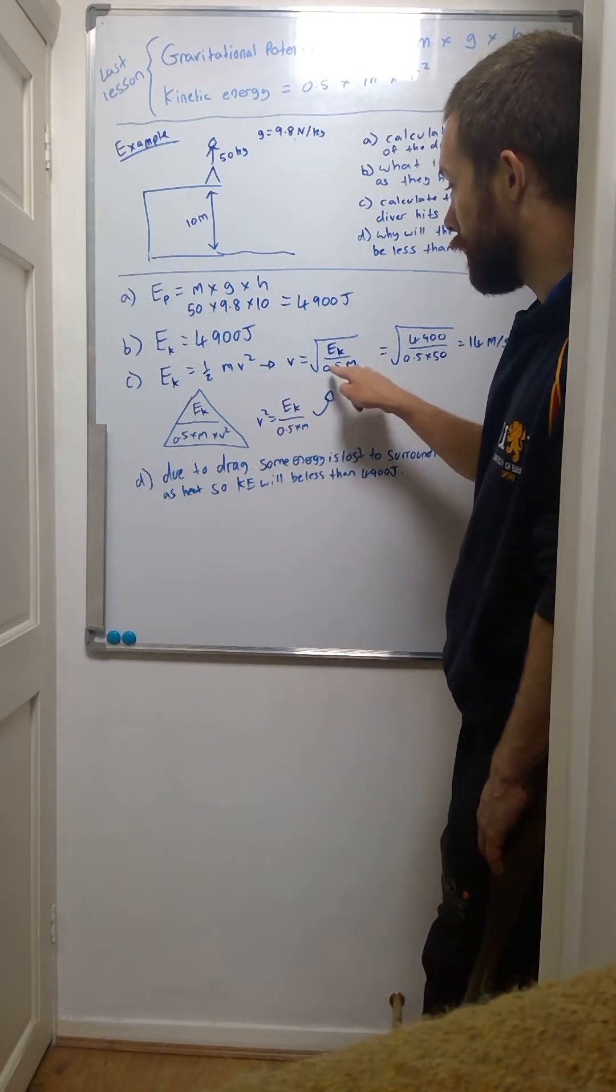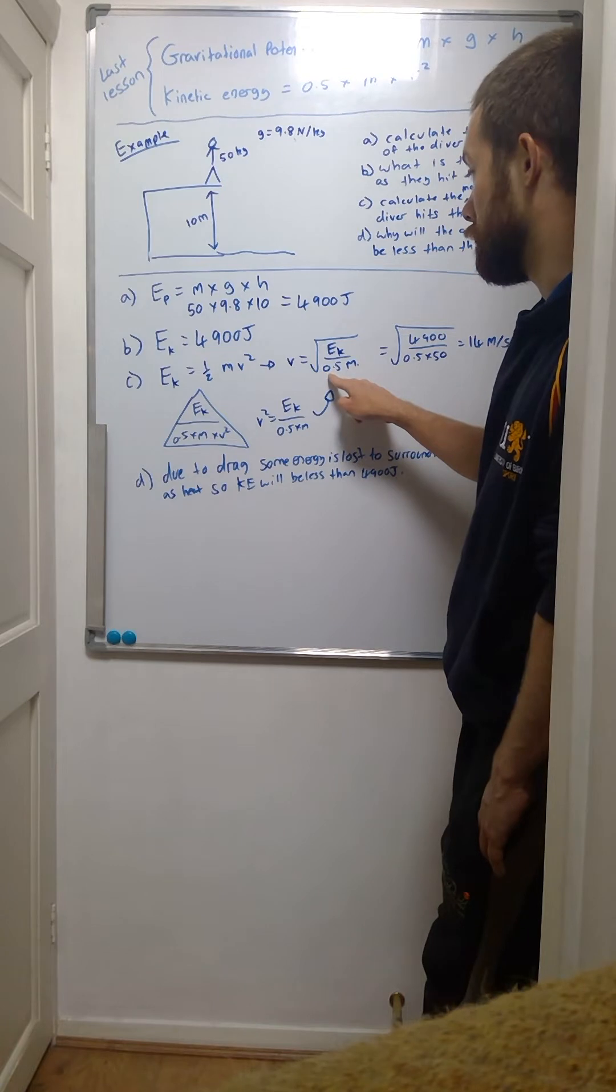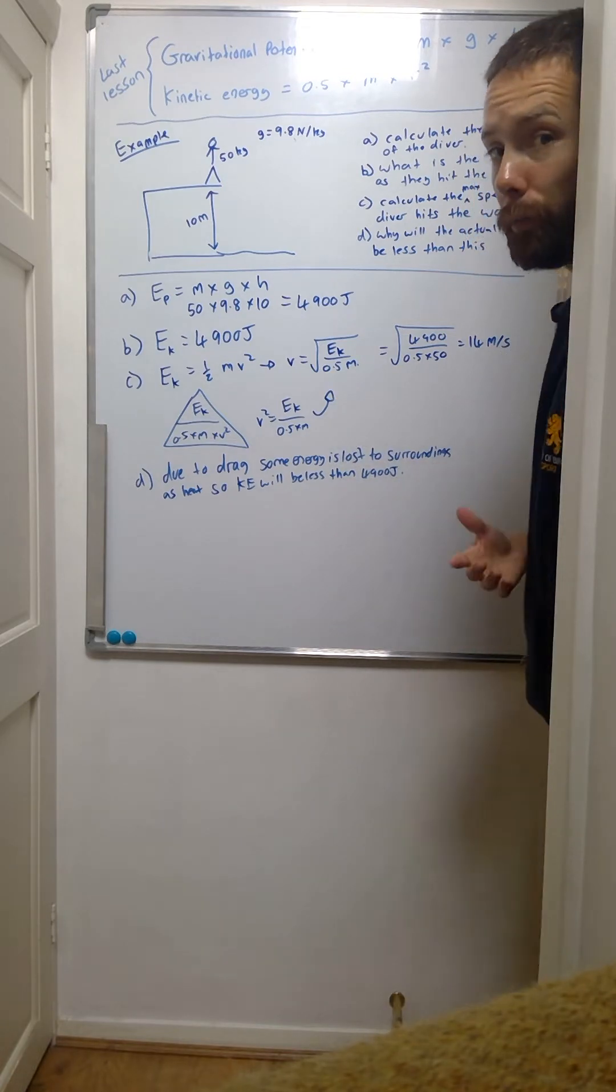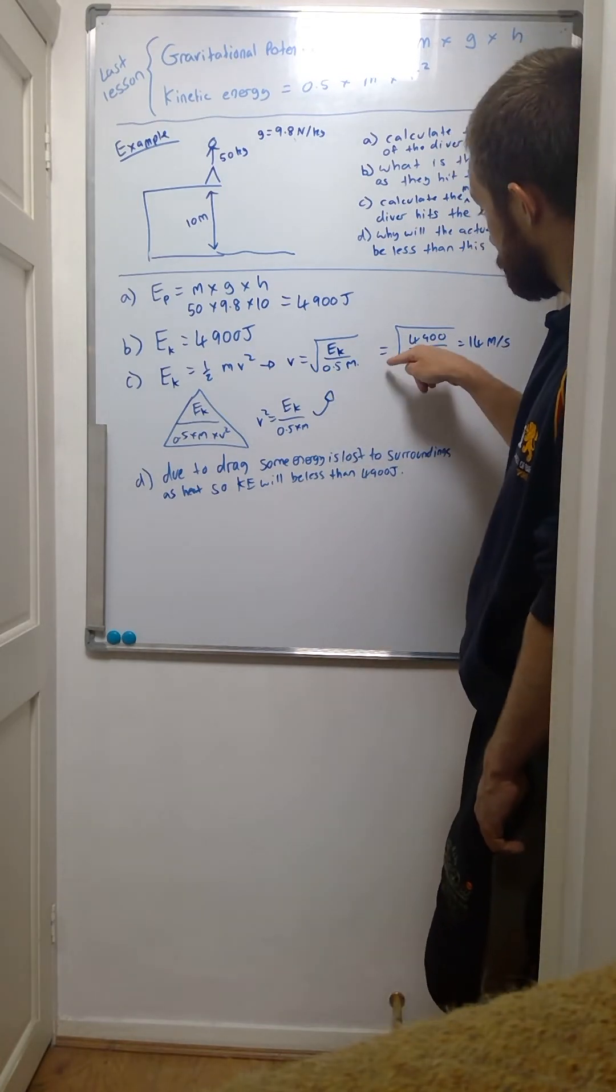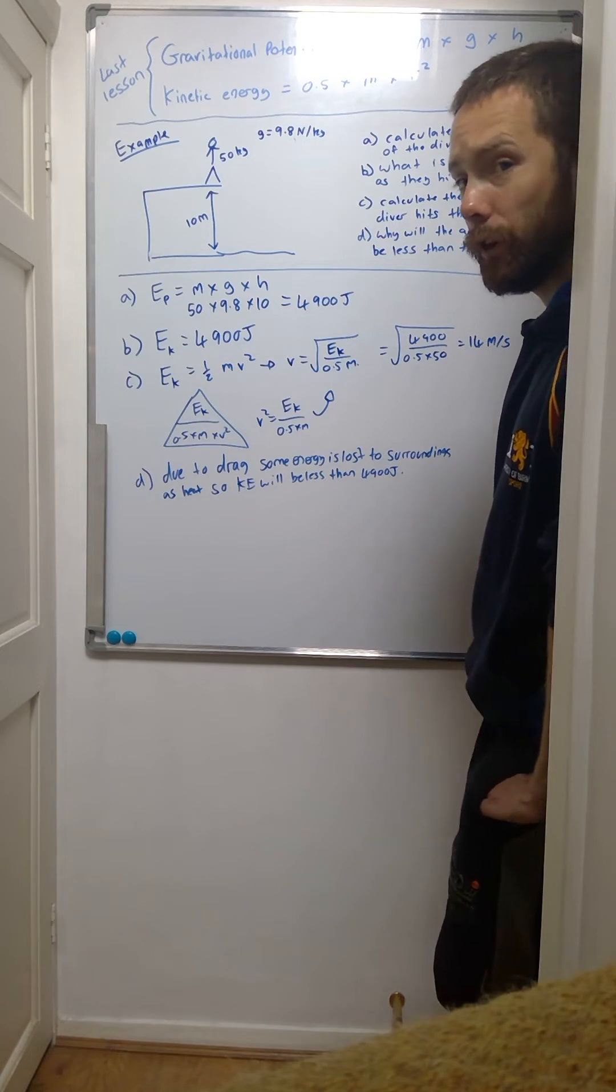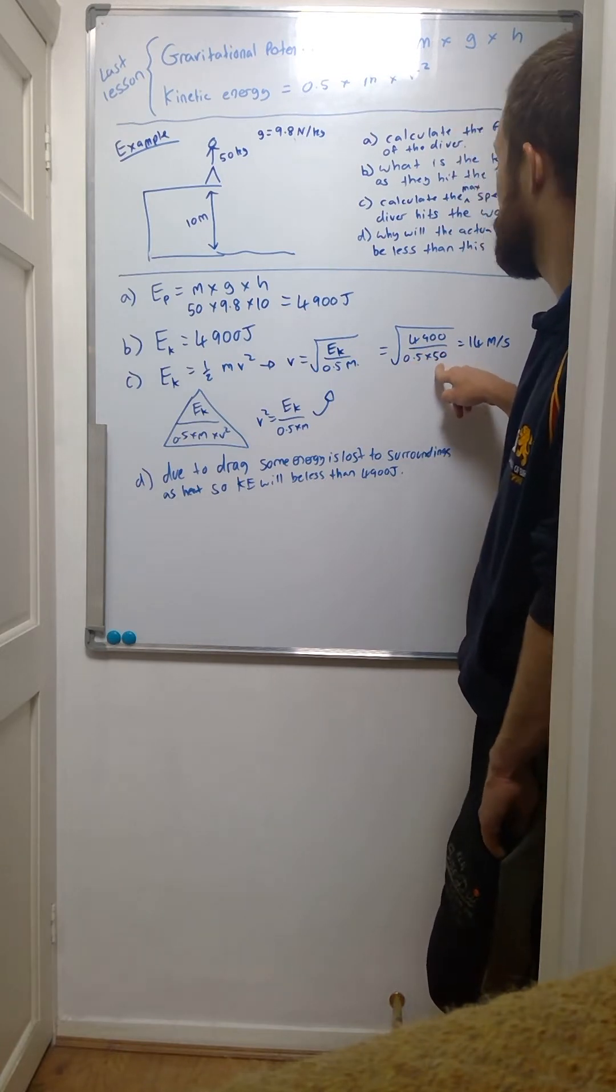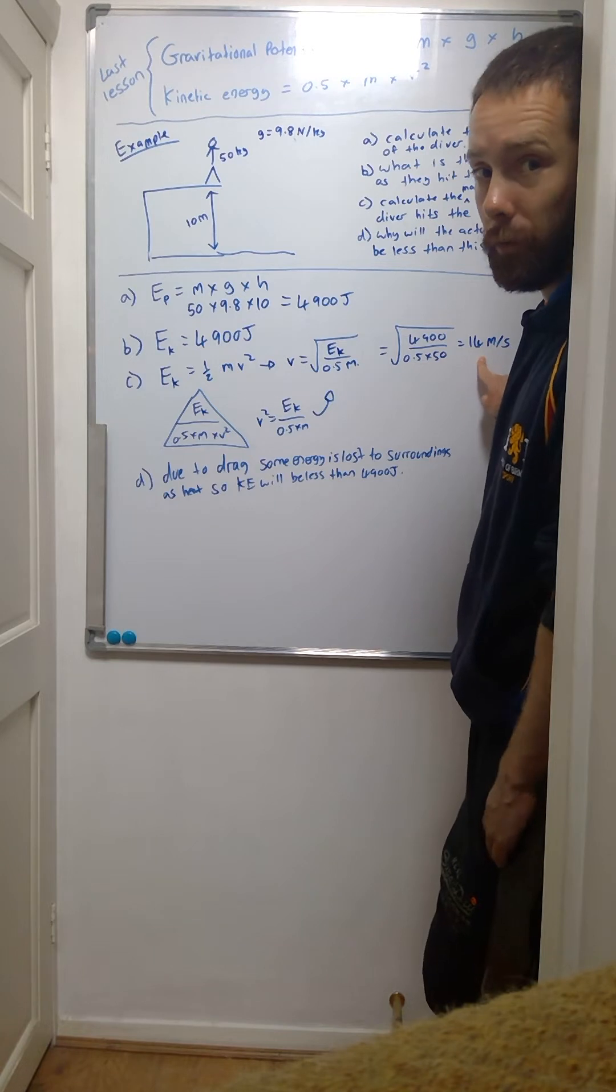If I type my numbers into the calculator - again, square root of 4,900 over half times the mass of 50 - gives us a speed of 14 meters per second.